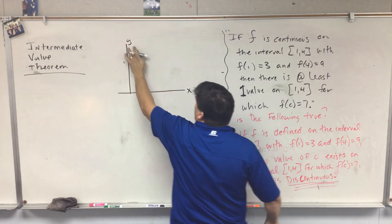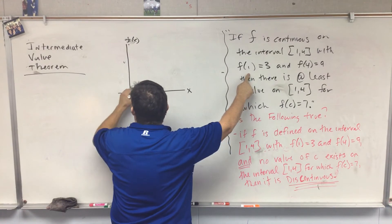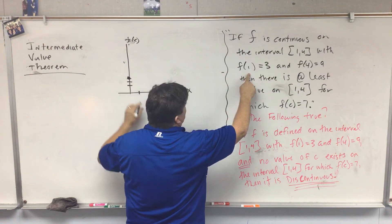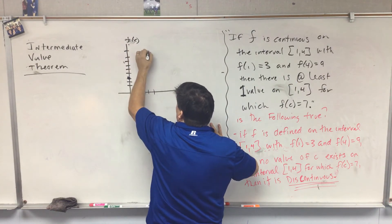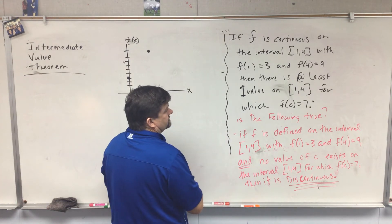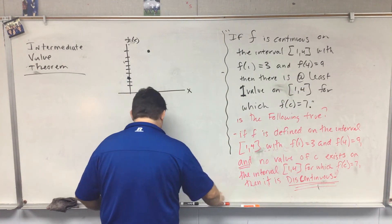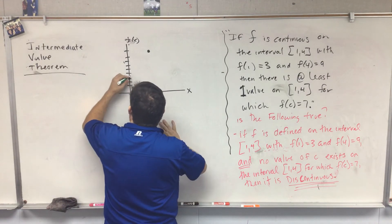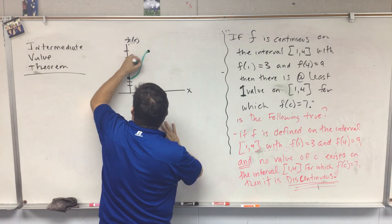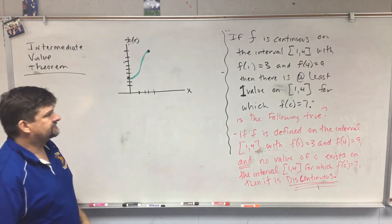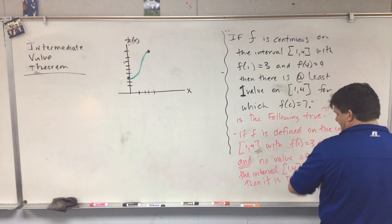So f(x), and I have a value of f(1) is 3, and f(4) is 9. Close enough. Then there is at least one value on 1 to 4. Let me draw my different colors. Let's just say that's what my function looks like right here.